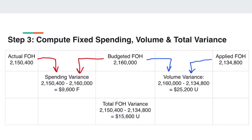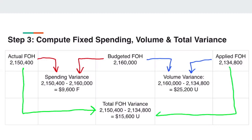Finally, to find total fixed overhead variance, subtract actual fixed overhead from applied fixed overhead. When you subtract the two numbers, you get $15,600U. Since it is positive, it is unfavorable, so we place a U beside it — taking the first box and subtracting it by the last box.